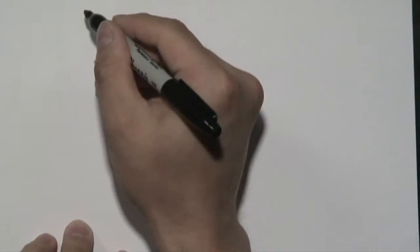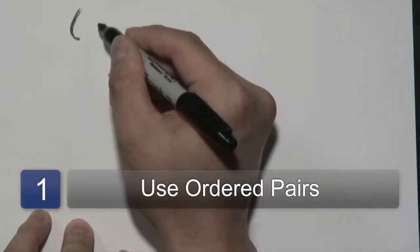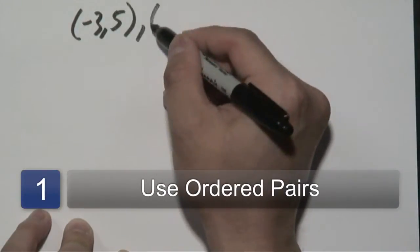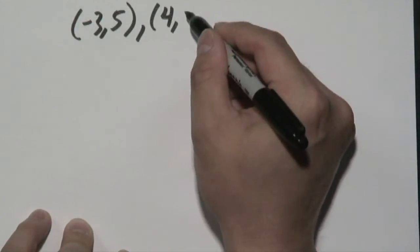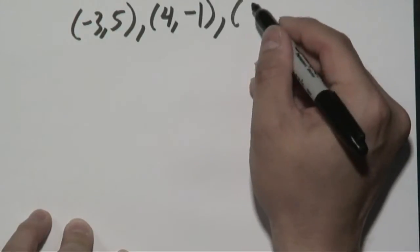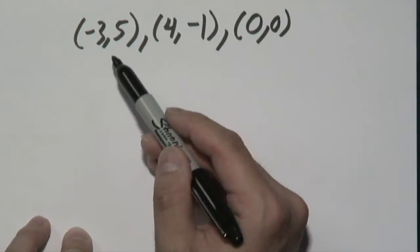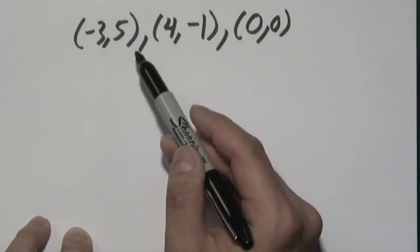We're going to explore range from a relation standpoint as in a bunch of ordered pairs. So let's just say if you had (-3, 5), (4, -1), and (0, 0). For range and ordered pairs, you're looking for the set of y values.